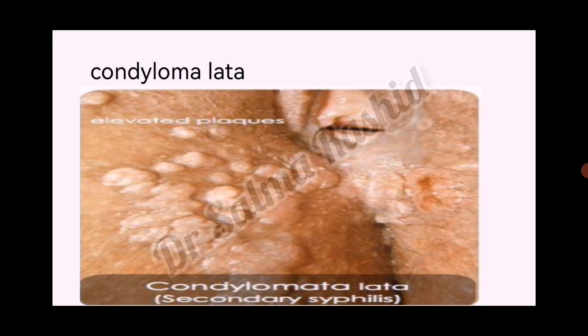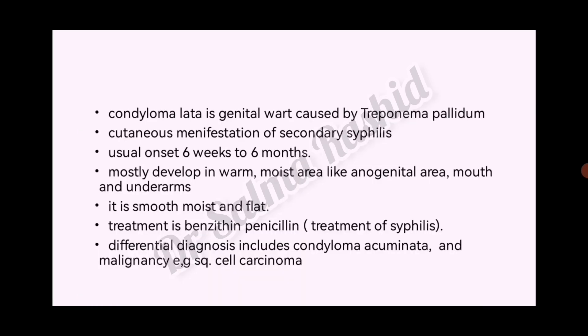This is the picture of condyloma lata. Condyloma lata is a genital wart caused by Treponema pallidum — a cutaneous manifestation of secondary syphilis. Usual onset is six weeks to six months.